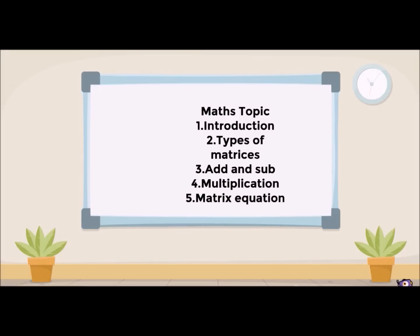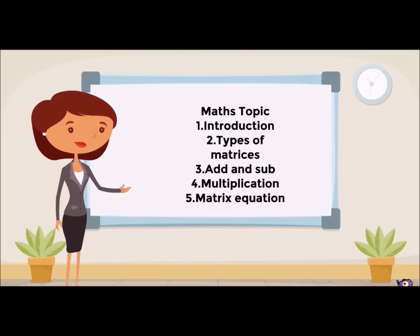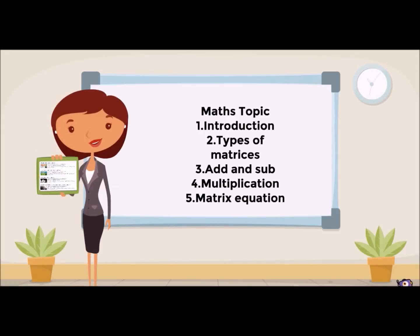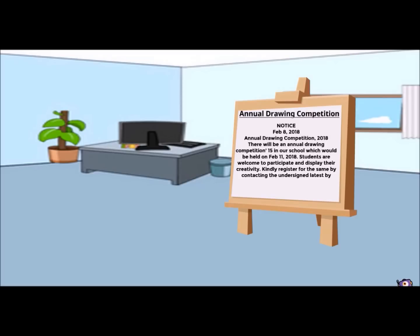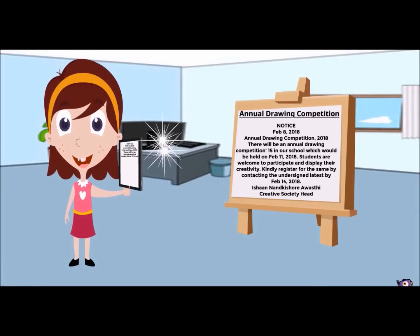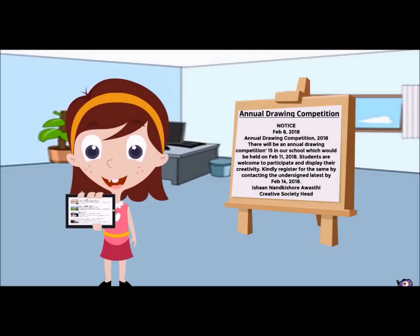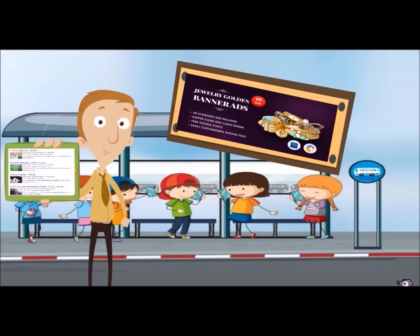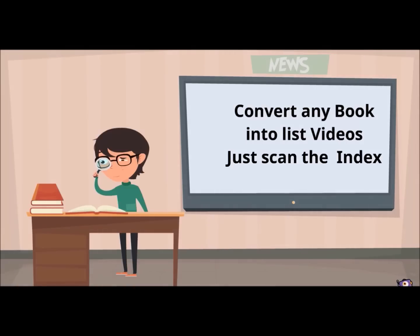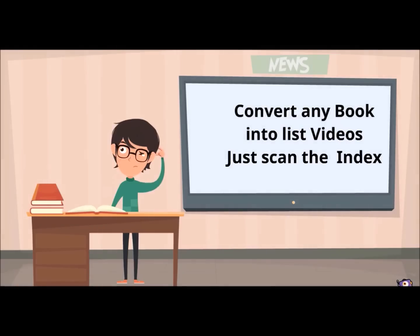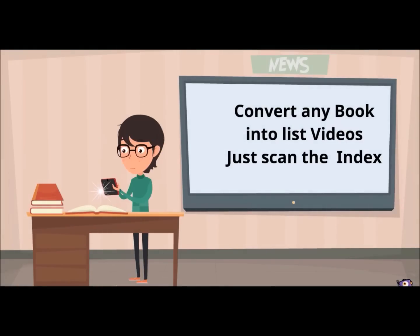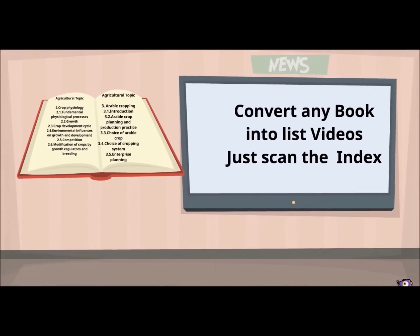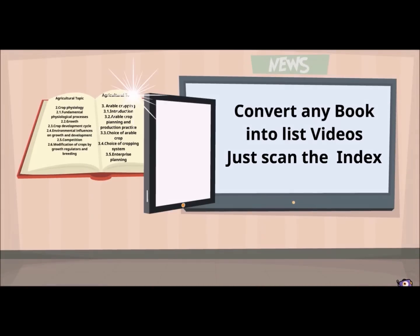Scan to Learn is a simple tool to learn anything quickly. Click any board or notice board photo and create a list of topics. If you are at a place like a bus stop, click on a banner and jump to videos. There is always a book on every subject, and each book has an index with 80 to 90 topics. Scan the index and convert it into a list of videos.